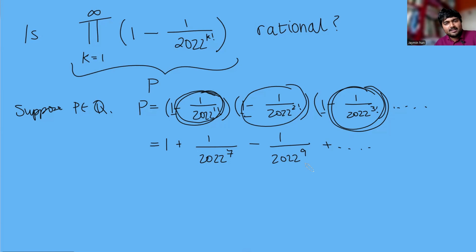Each of these terms here are of the form 1 over 2022 to the n and then either plus or minus 1 on the top. Now I argue that we're never going to get repeats. For example here we've got a 1 over 2022 to the 7. I argue that when we expand all of this and consider all the products we're never going to get a 2022 to the 7 term again.